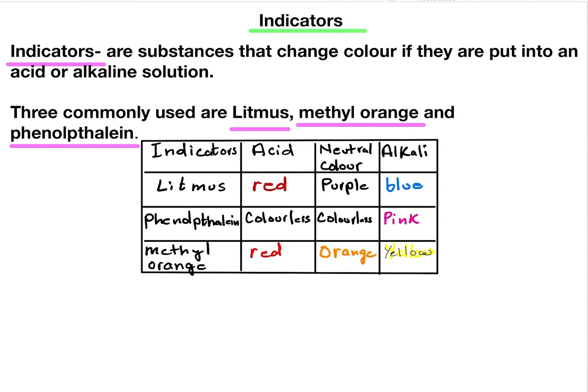Blue litmus will turn red in an acidic solution; its original color is purple. Litmus will turn blue in an alkaline solution. Phenolphthalein's original color is colorless; in acid it remains colorless, and in a base it turns pink. Phenolphthalein is often used in the titration process.